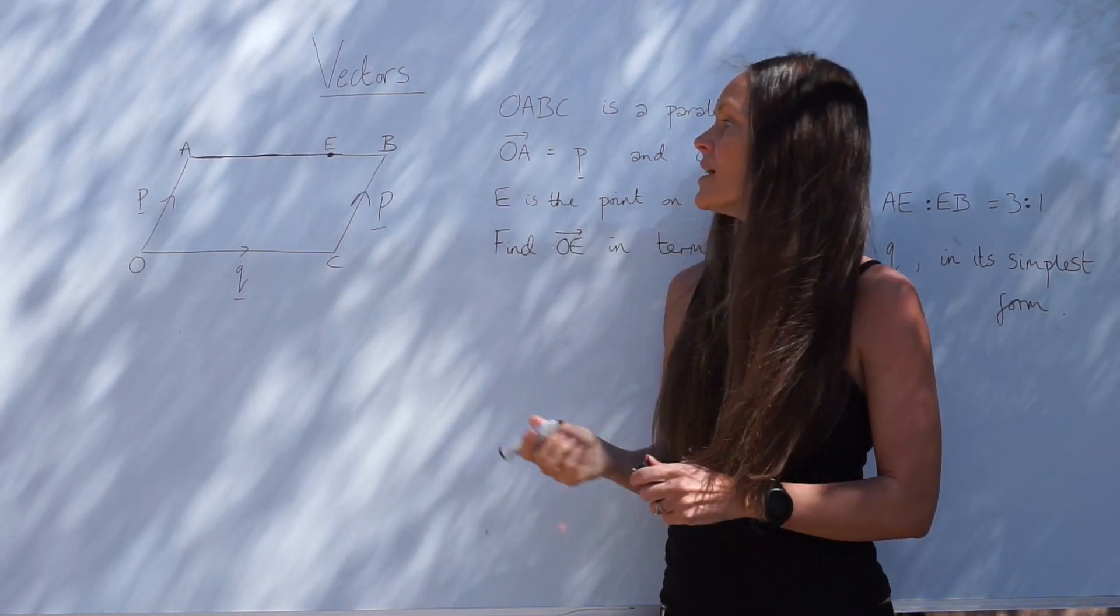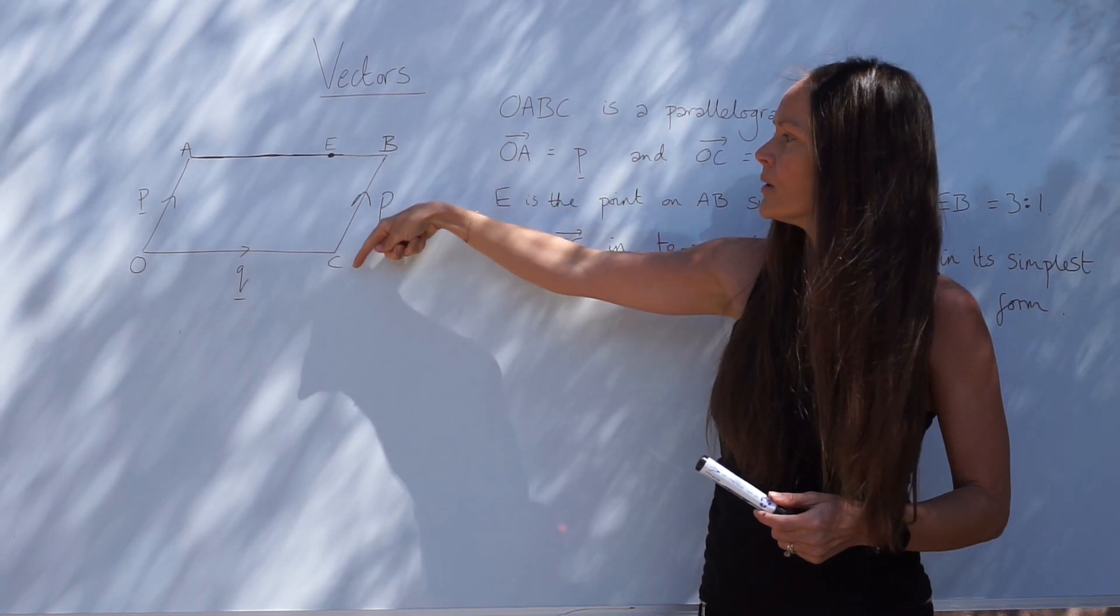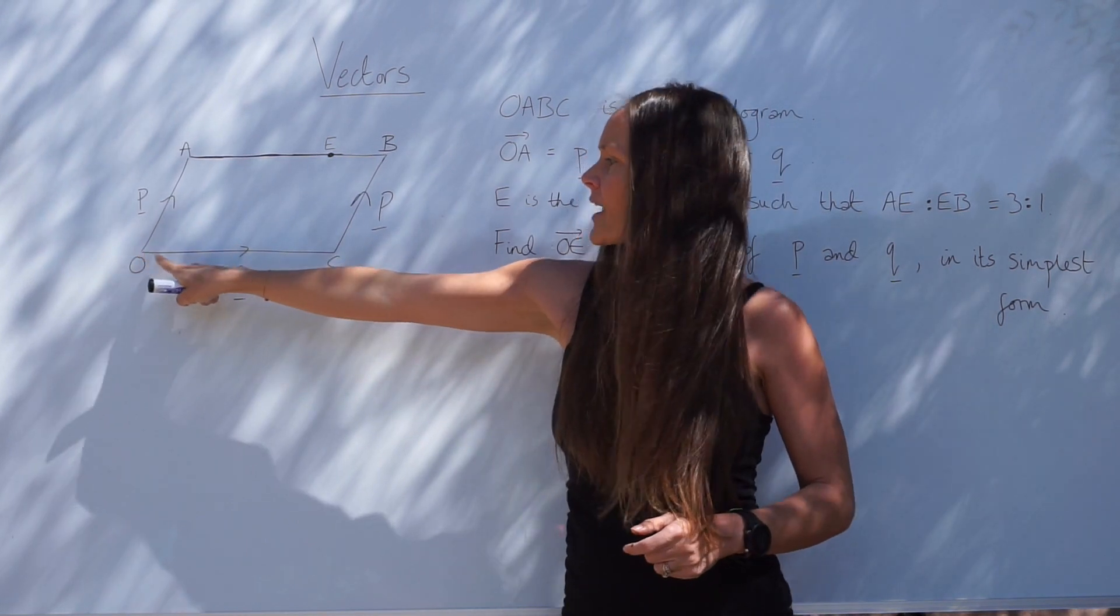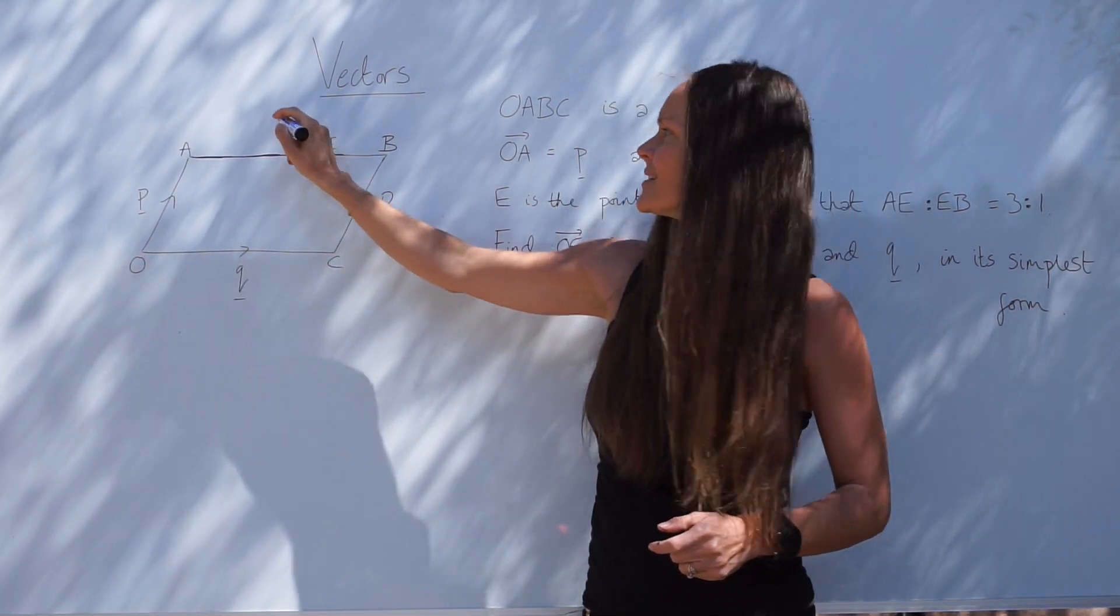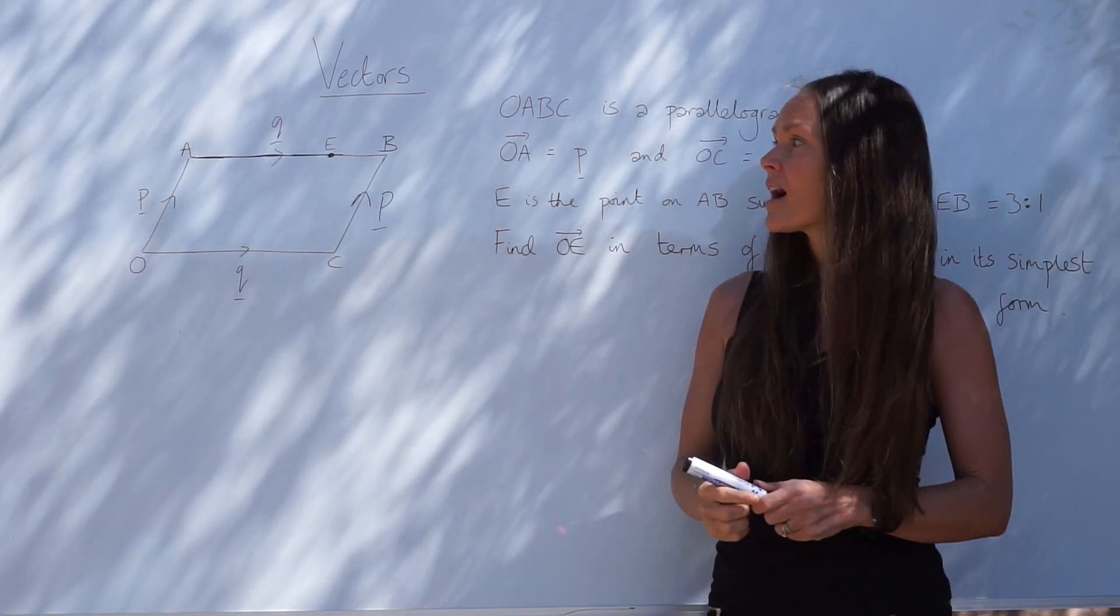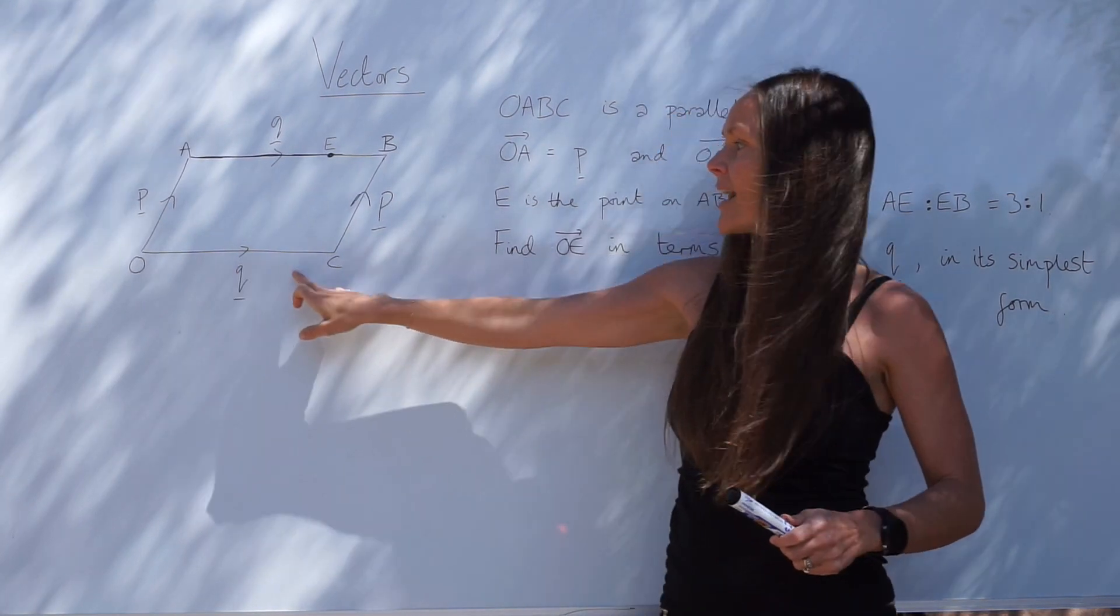So if you were to travel against the arrow, that would become negative P. So if this is vector Q, this line here, AB, is also vector Q, because this line is parallel to the line OC, and it's the same length.